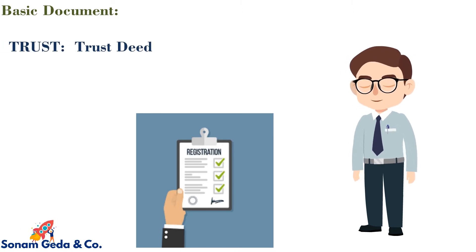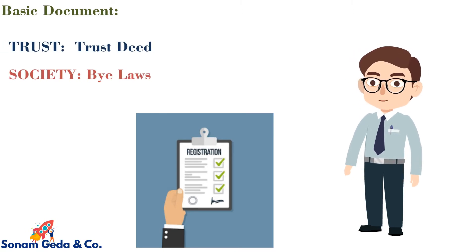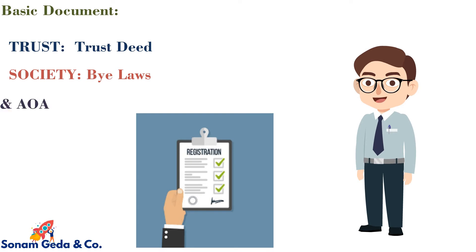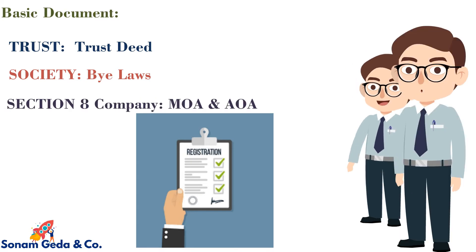Basic document: in the case of a Trust the basic document is a Trust Deed; in the case of a Society it is the Bylaws; and in the case of a Section 8 Company it is the MOA and AOA.